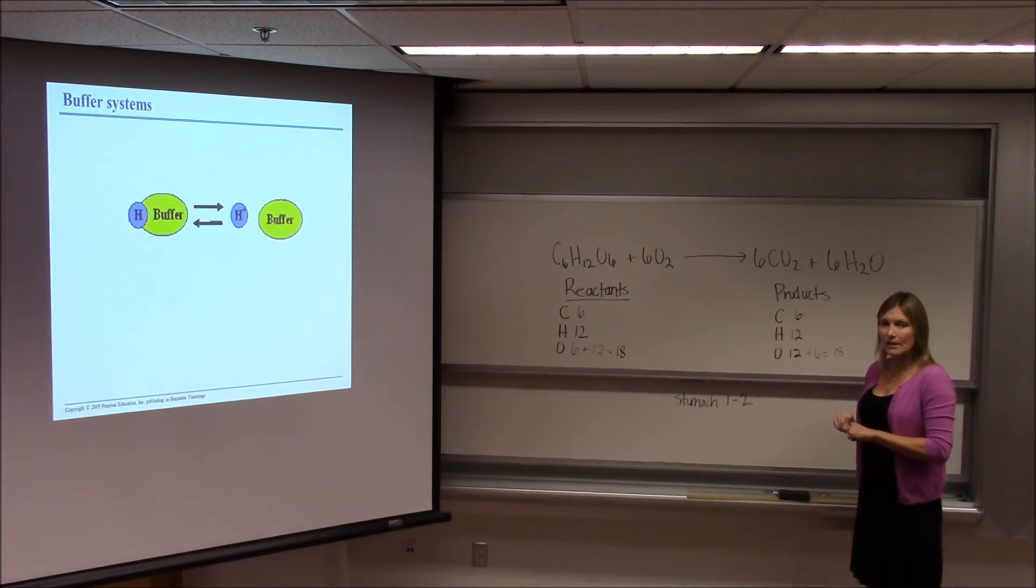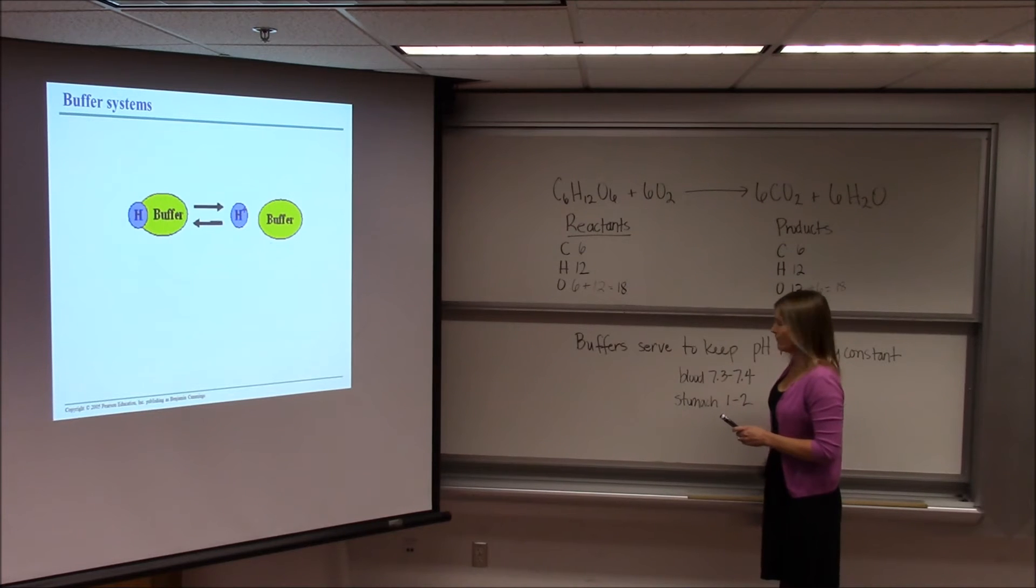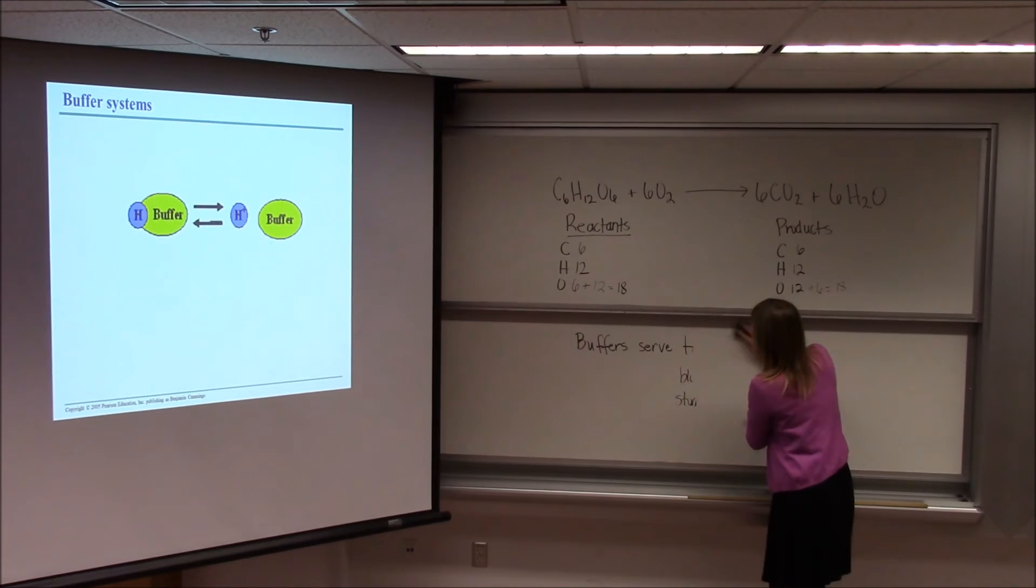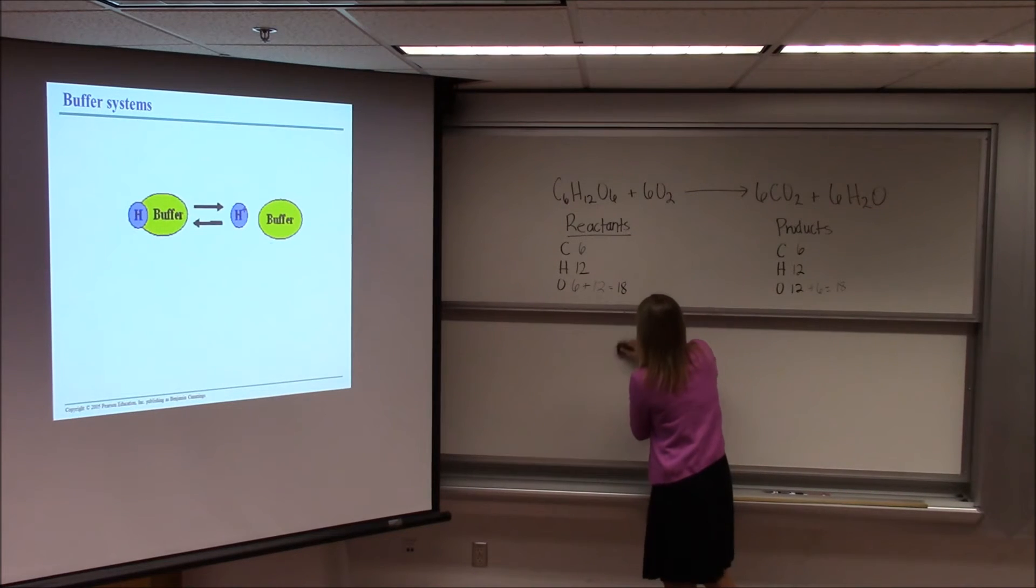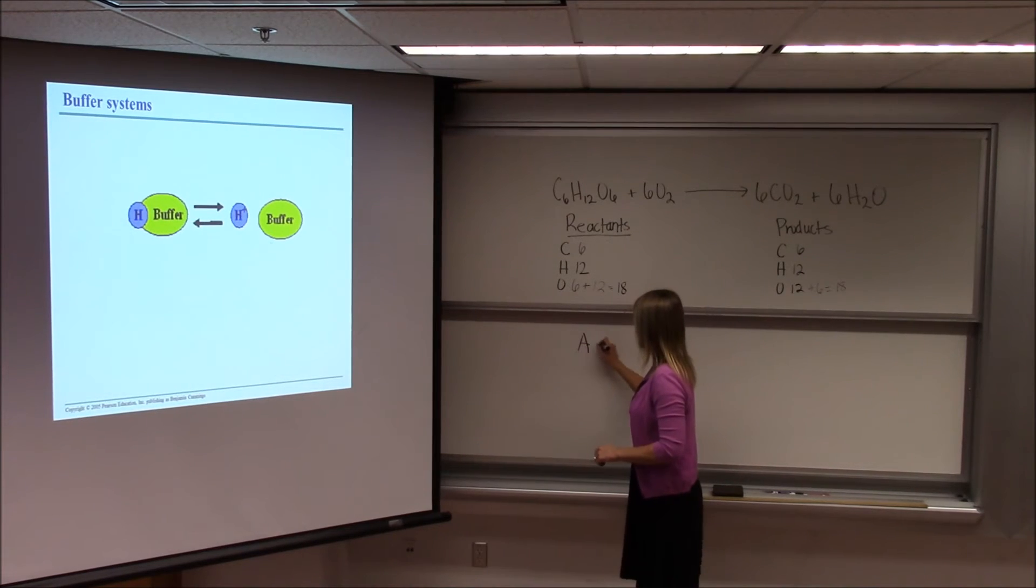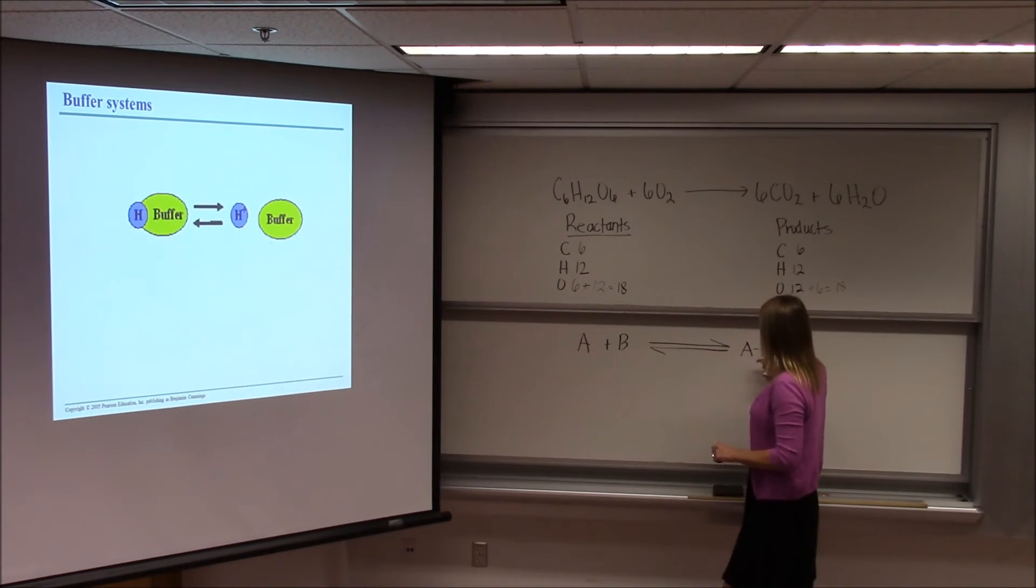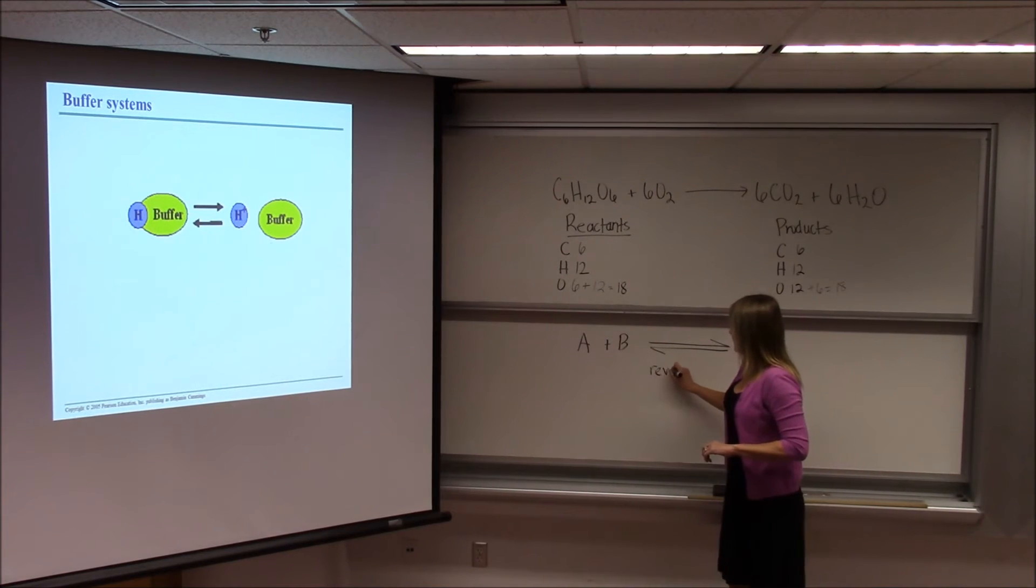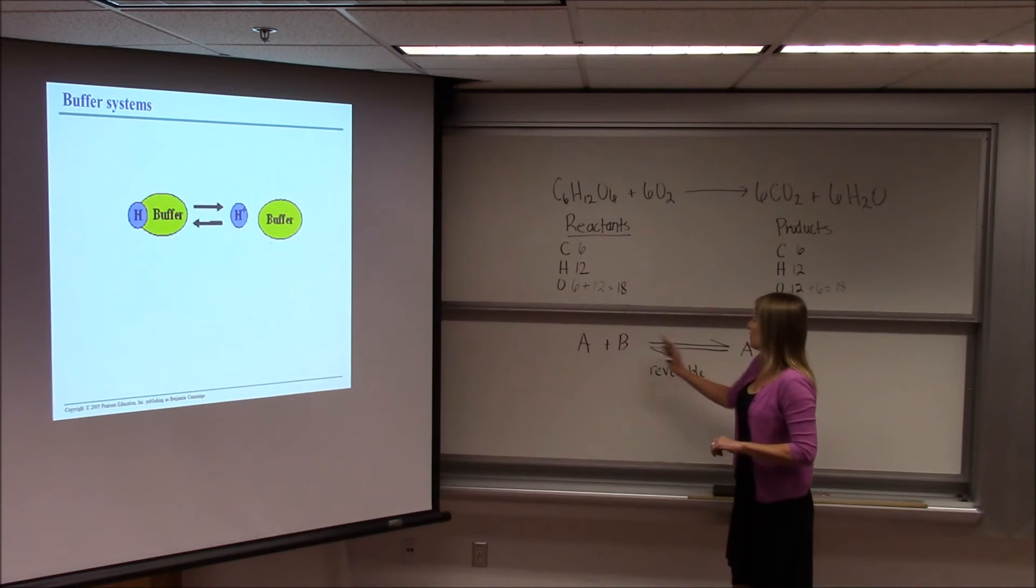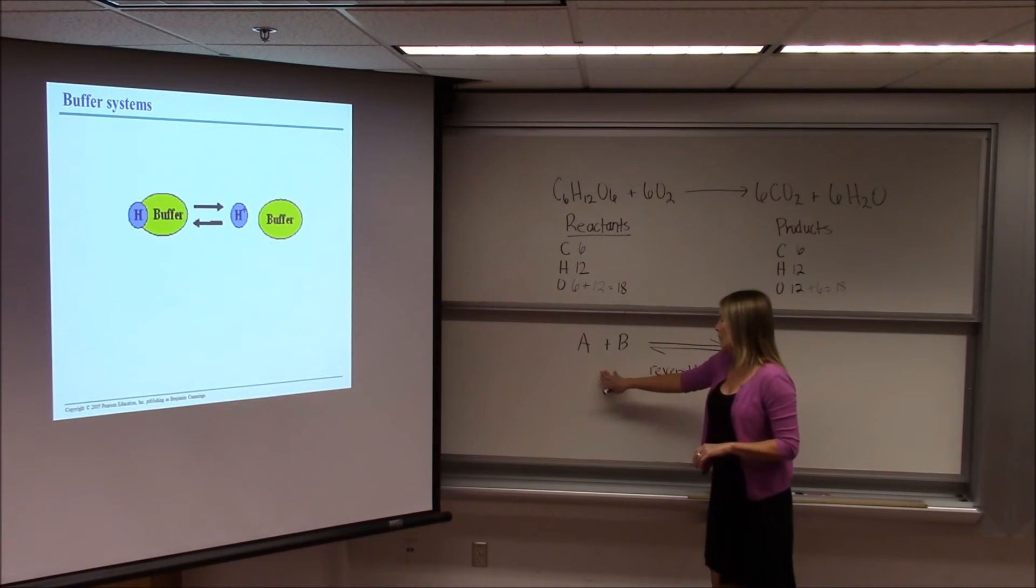Sometimes we have reactions that can move in either direction. They're reversible. And reversible reactions are shown with a different type of arrow. In a reversible reaction, we might just have some imaginary atoms here to show this example. This would be reversible. So depending on which way we're going, the reactants are going to be on one side of the equation, on one side of the arrow, and then the products will be on the other side.